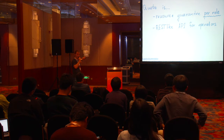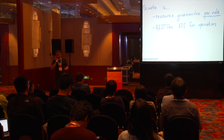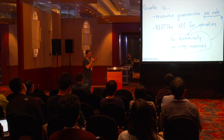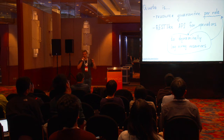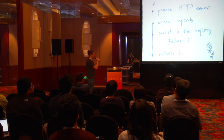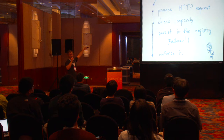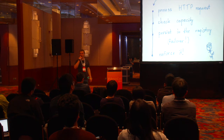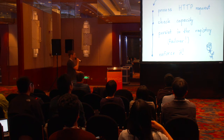Quota provides a REST API for operators — not frameworks. Quota is only for operators and the REST API allows operators to lay away resources for certain roles. A request comes in and we check the capacity to see whether there are enough resources in the cluster to satisfy the request. Then we persist the request in the registry for failover, then we enforce the request. And everyone is happy — that's the theory.